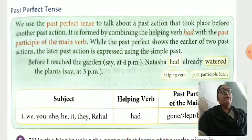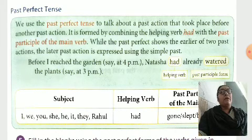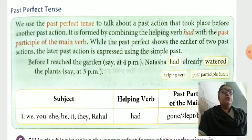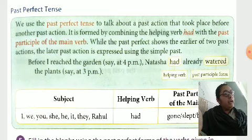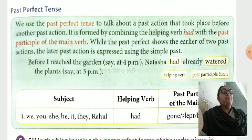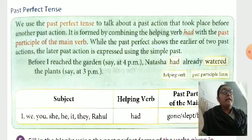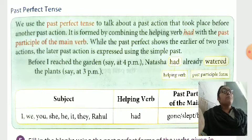It is formed by combining the helping verb had with the past participle of the main verb. Have and has, in past transform, become had. So in this past perfect tense, we use the helping verb had plus the verb past participle form, V3.